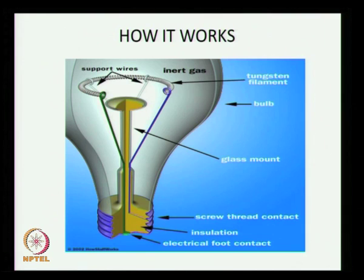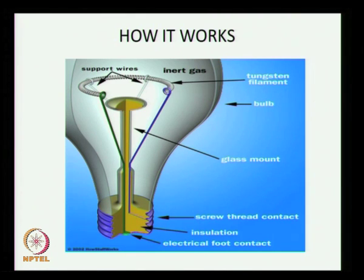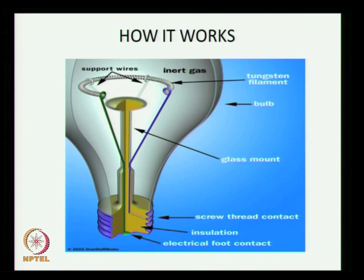Now you can see how it works. The electrical bulb works on the principle of Joule's effect. When you switch on the power, electricity passes through the tungsten filament, which is very important to the electrical bulb. After that, it produces some heat.